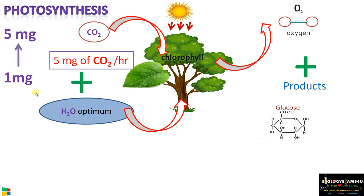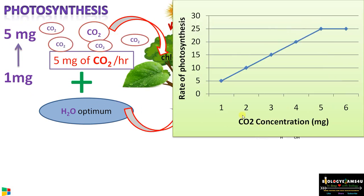When we increase the concentration of carbon dioxide gradually from 1 mg to 5 mg, the rate of photosynthesis also shoots up and increases gradually until reaching the optimum, which is 5 mg.